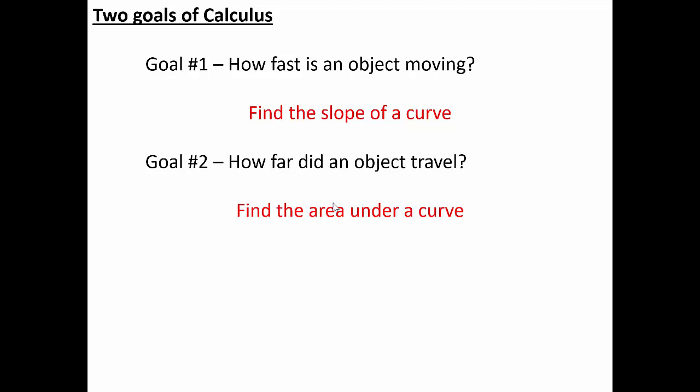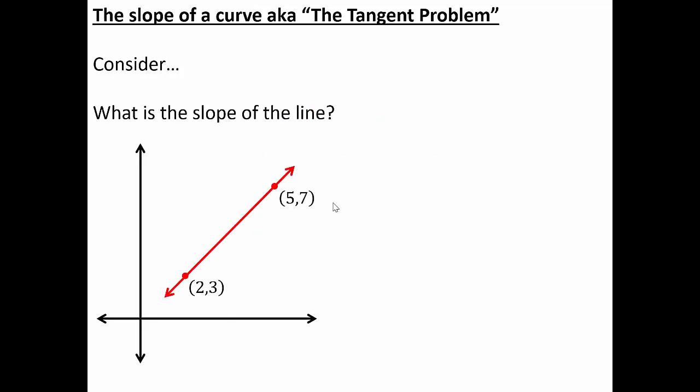I'm going to take a closer look at goal number one to point out the requirement of the limit in order to discuss the slope of a curve. In calculus we often refer to this as the tangent problem, which is goal number one, and the area problem is goal number two. I'll focus on goal number one as our bridge to the concept known as the limit.